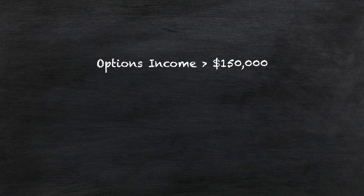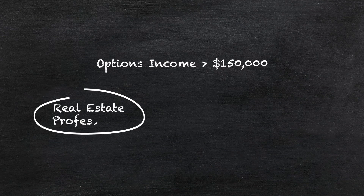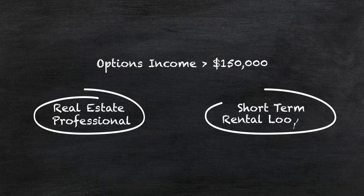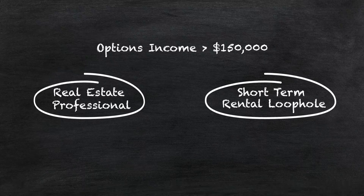And once your modified adjusted gross income is $150,000 or more, this deduction is phased out and you generally can't take rental losses against your active income unless you qualify as a real estate professional or use the short-term rental loophole, which is why these two strategies are so powerful among high-income earners.